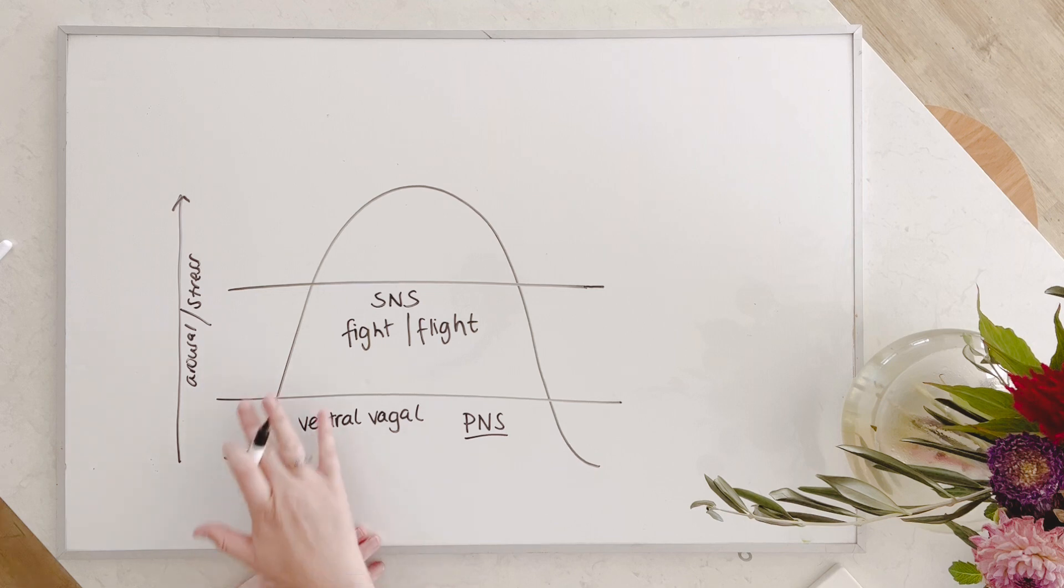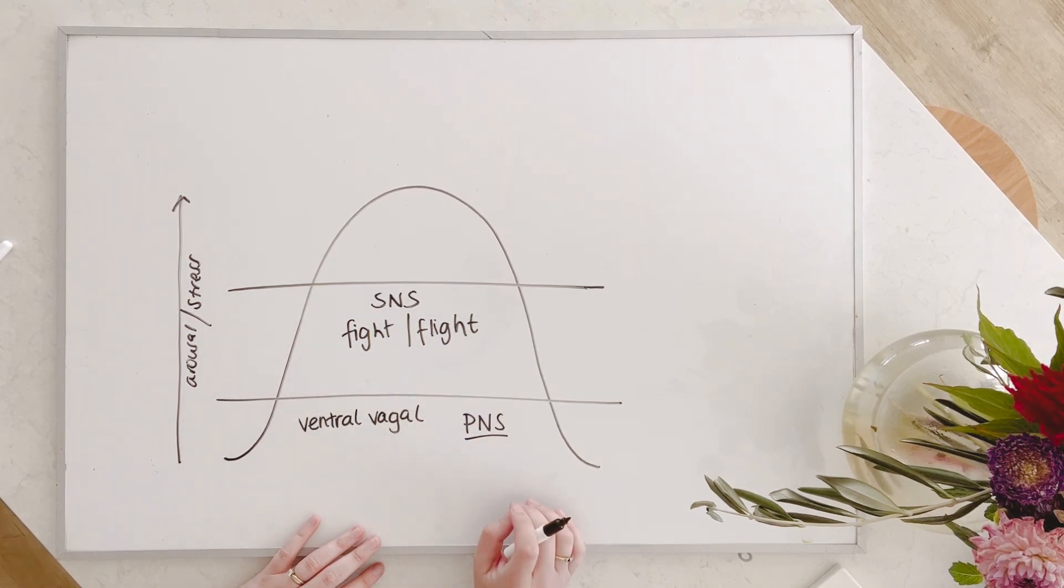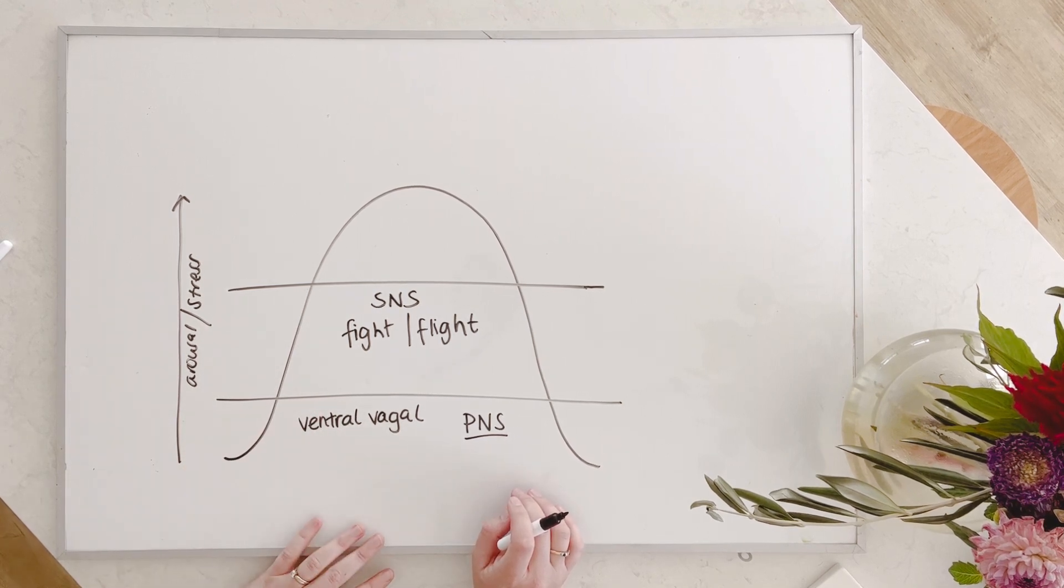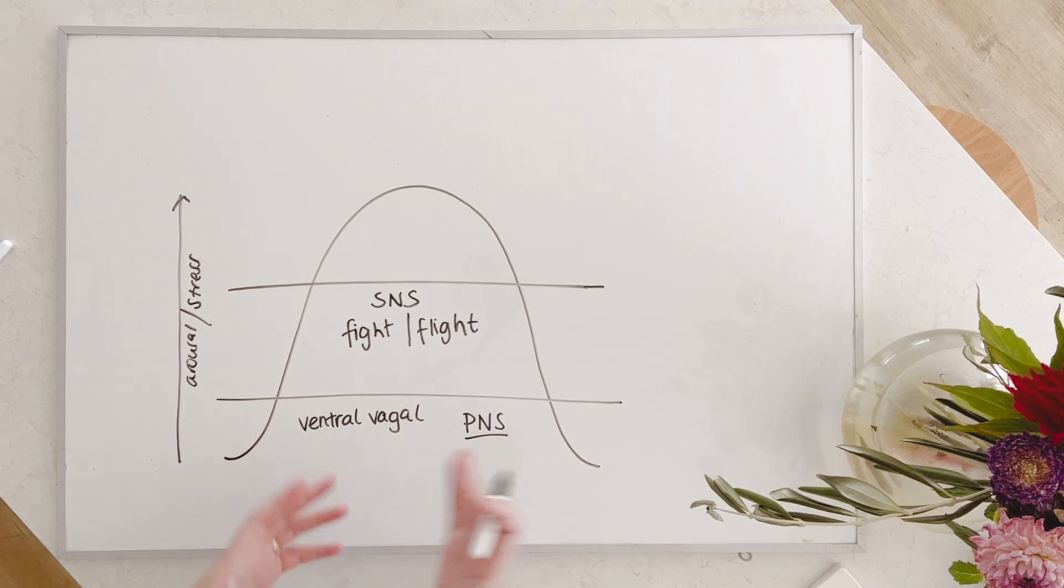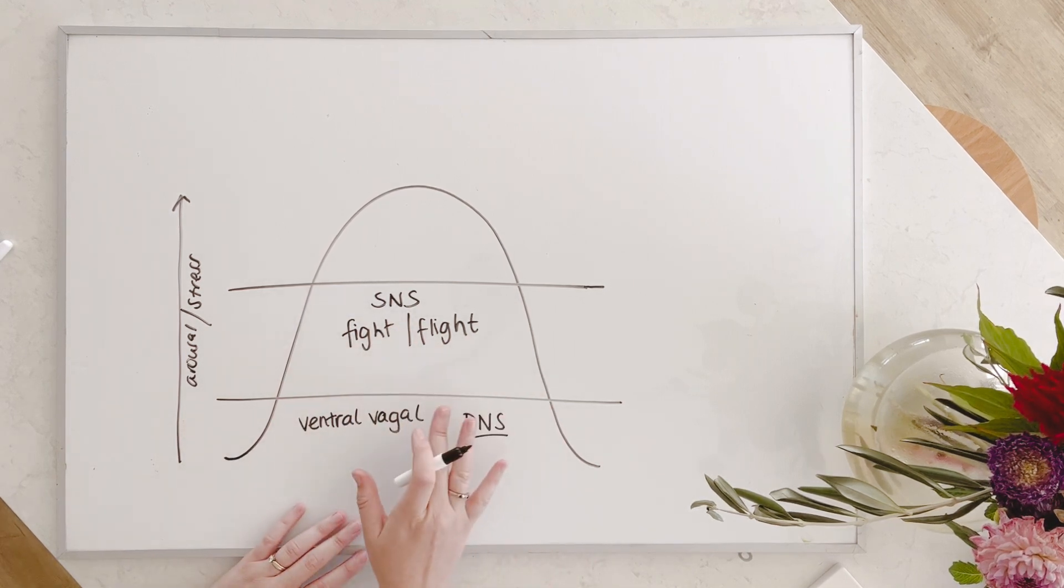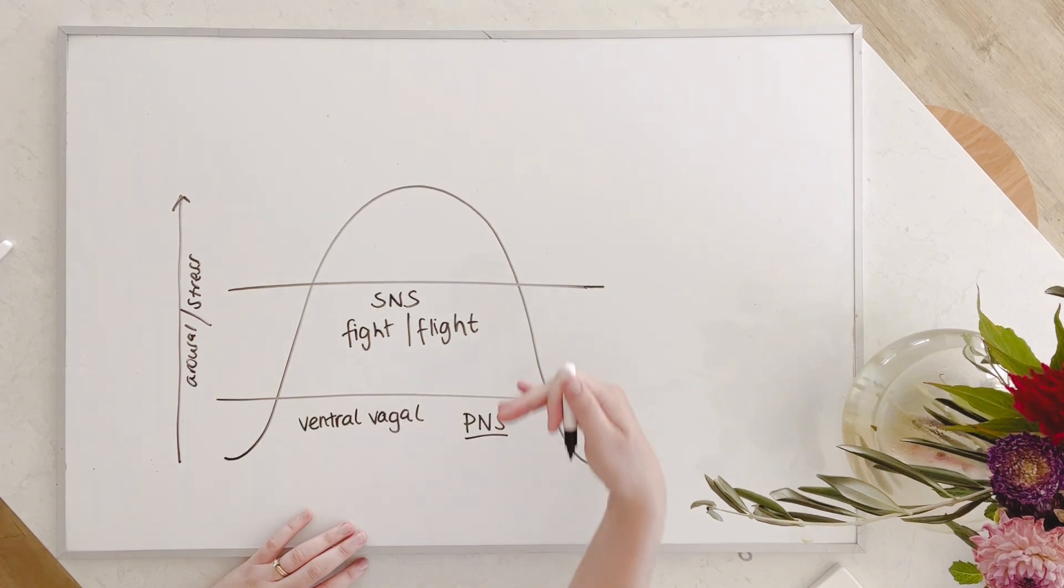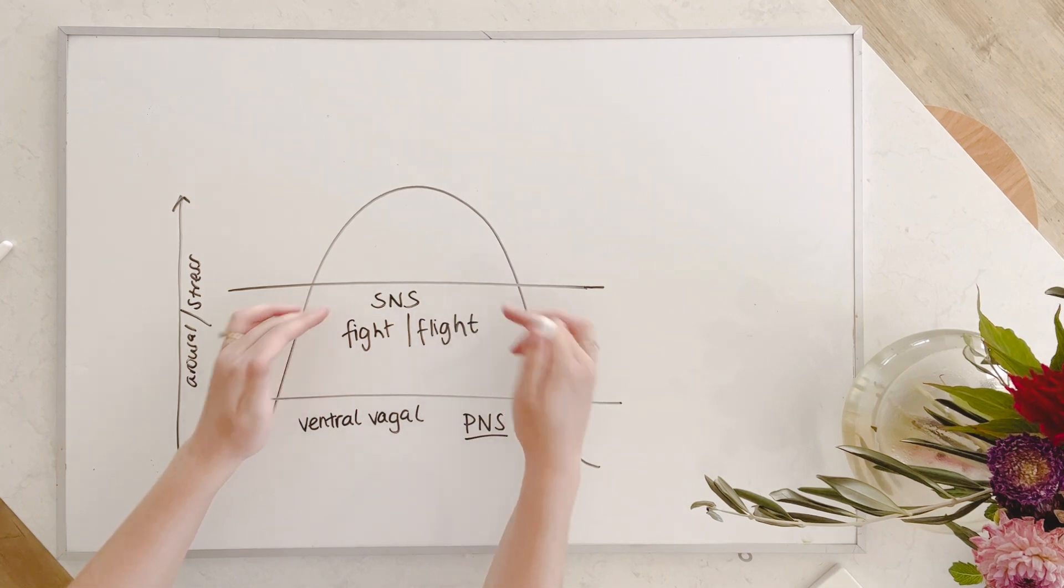So if we perceive something to be threatening, and that could be an email from a boss, it could be worries that we have around our finances, it could be a presentation that we have coming up, it could be going to therapy, whatever it is, can be something that tips our kind of level of tolerance, it tips our stress load up into this place of sympathetic.